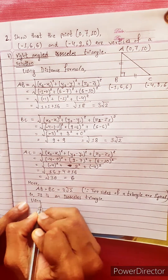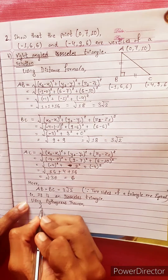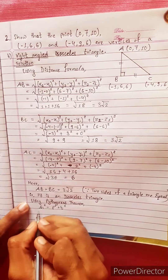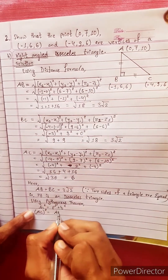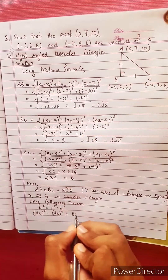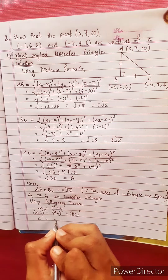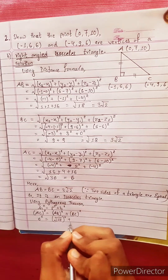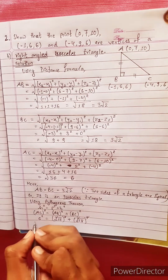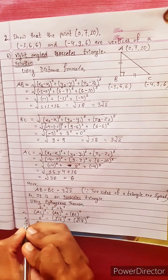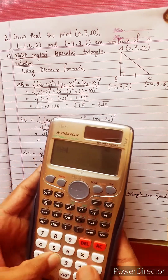Now using the Pythagorean theorem: H² = P² + B². Here H is the hypotenuse, which is AC = 6, and AB and BC are the other two sides. So AC² = AB² + BC²: 6² = (√18)² + (√18)², which gives 36 = 18 + 18 = 36. The equation holds, confirming this is a right angle triangle.